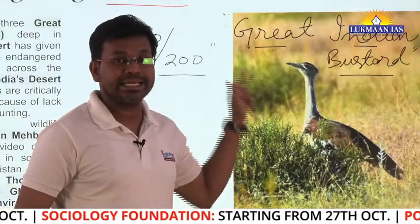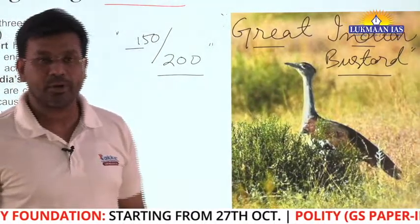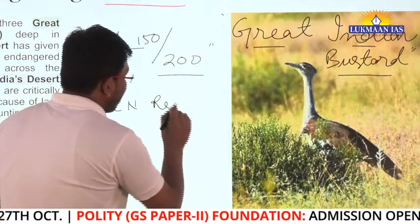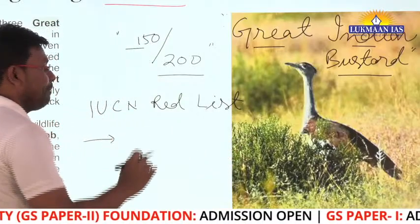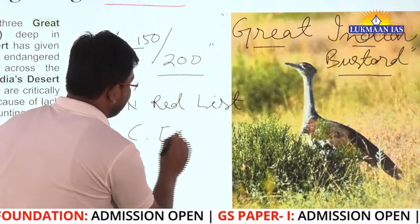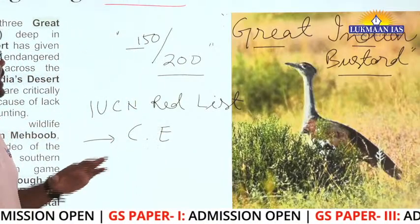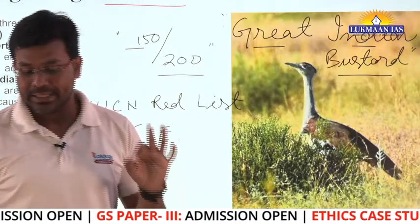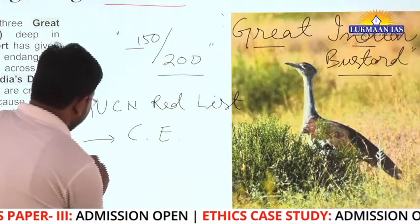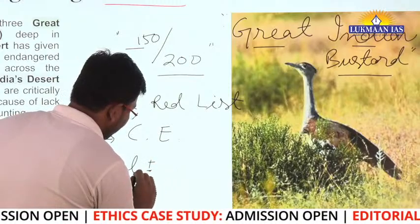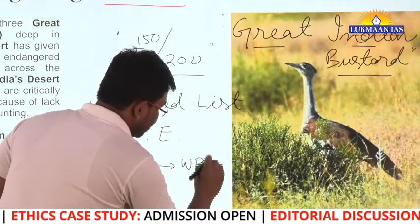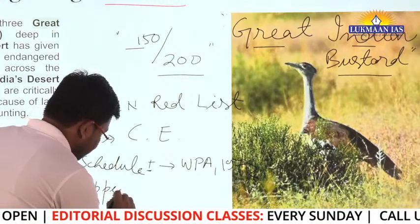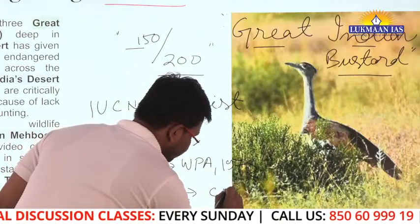The Great Indian Bustard is a critically endangered species. Under the IUCN Red List, it is mentioned under the critically endangered category, meaning it faces one of the greatest threats of extinction. It is also mentioned under Schedule 1 of the Wildlife Protection Act, 1972, and under Appendix 1 of CITES.